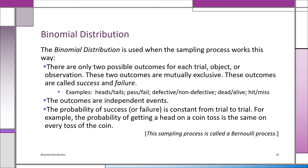Now we're ready to learn about the binomial distribution. The binomial distribution is used when there are only two possible outcomes, and these two outcomes are mutually exclusive. We call these outcomes success and failure — even though a defective product may not seem like success, it's just the terminology. Examples: heads or tails, pass or fail a course, defective or not defective, dead or alive, hit or miss.